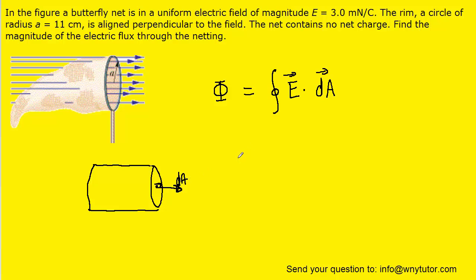Now, in this question, it turns out that the magnitude of the electric flux through the circular ring is actually going to be the same as the magnitude of the electric flux through the netting. And so we can really change the question to finding the magnitude of the electric flux through the circular ring.